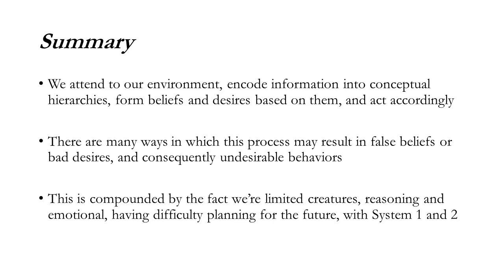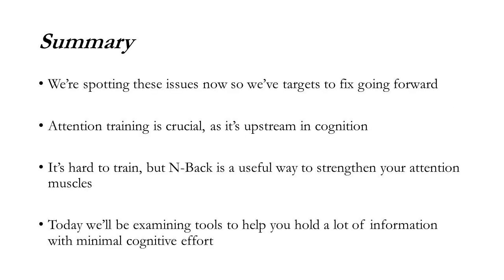We're spotting these cognitive biases in today's lecture so we have targets for what to fix going forward. We're going to be able to read off some of these issues from the model of cognition introduced in the last lecture. Important for this is attention training — it's sort of the upstream issue. We don't have a lot of attention, but you can improve it.